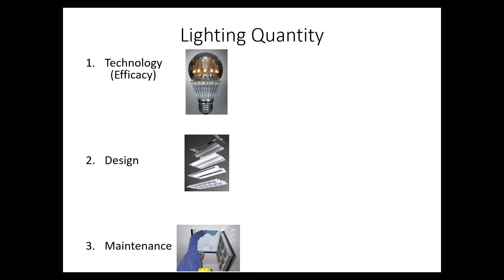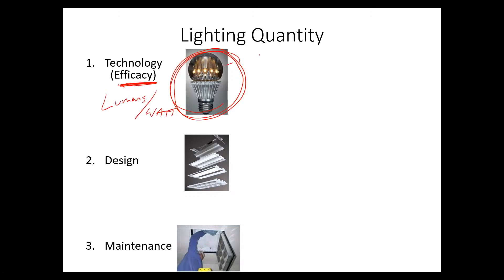Regarding lighting quantity, light emanates from some device, some type of technology. This can be LED, fluorescent, or incandescent. What we're interested in there is the efficacy, which is the lumens per watt. Lumens are what is coming out of the bulb, and the watt is the energy going into the bulb. So we want to get a high efficacy — it's a lot like efficiency, but it's not unitless; it's lumens per watt. We want to maximize that.